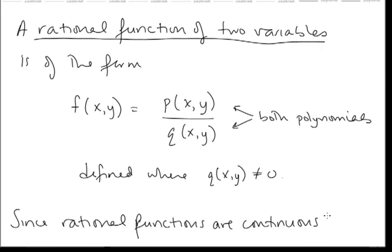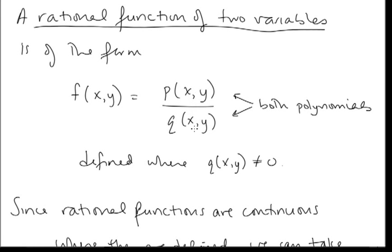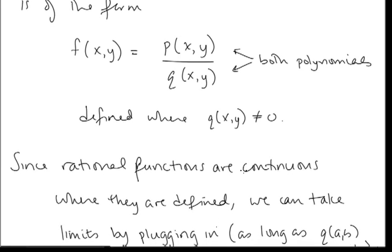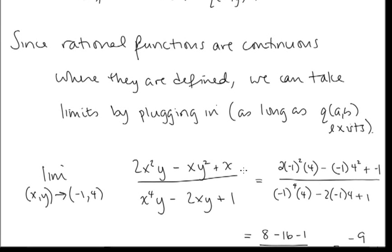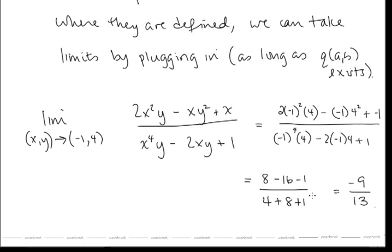A rational function of two variables is of the form p(x, y) / q(x, y), where both are polynomials. It is defined where q ≠ 0. Since rational functions are continuous wherever they are defined, we can take limits by plugging in, as long as the denominator is not zero at that point. So the limit as (x, y) → (−1, 4) of this rational function is found by plugging in x = −1 and y = 4, giving −9/13.